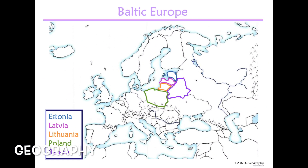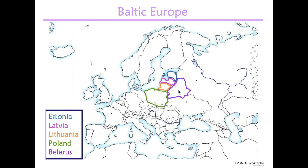For geography this week, we are in Baltic Europe. Last week we focused on Norway, Sweden, Finland, and Denmark. Notice this sea right here — it looks like a lady playing the flute — that is the Baltic Sea. If you can find Finland, we're going to sail across the Baltic Sea down into Estonia. We've got Estonia, Latvia, Lithuania, Poland, and Belarus.